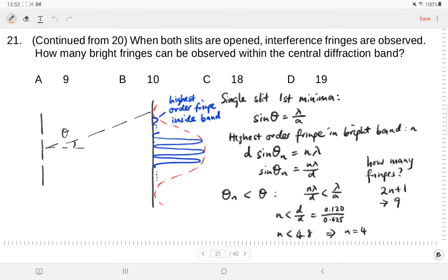In this question, we are trying to find how many interference fringes will you observe within the central diffraction band. First and foremost, we need to realize the angular position of the first order minima is given by the equation sine theta equals lambda upon a.